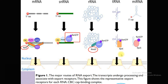For tRNA export, the main transport factor is exportin-t, also known as exportin in invertebrates. Exportin-t is a member of the importin-beta family and, like CRM1, is regulated by the small GTPase Ran. As shown, Ran is attached with CRM1 and exportin, and exportin-t is also attached accordingly.